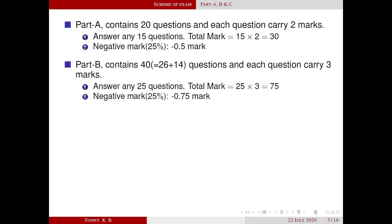Part B contains 40 questions and each question carries three marks. Out of this 40 questions, around 26 questions are from first three modules. In this part you have to answer maximum 25 questions. So total marks allotted to this part is 75. Negative mark for this part is 25% which is minus 0.75 marks.